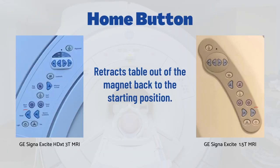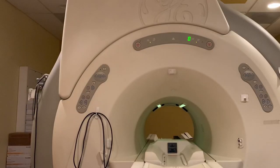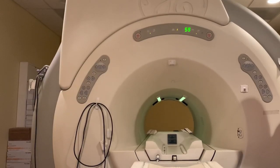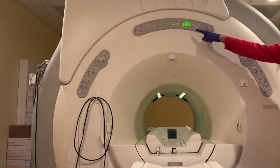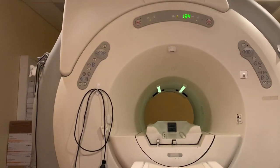The home button moves the patient table out of the magnet to the starting position. Once in the home position, the patient table can move up and down using the pedals located at the base of the magnet or at the rear of the patient table.